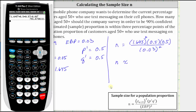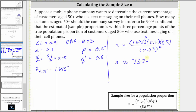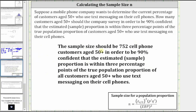Enter. Notice how we do get a decimal. Regardless of the decimal, we always want to round up to verify the sample size is large enough. So here we round up to 752. Even if we had 751.1, we would still round up, because if we rounded down, the sample size would not be large enough. So now we know the sample size should be 752 cell phone customers age 50 plus in order to be 90% confident that the estimated sample proportion is within three percentage points of the true population proportion of all customers age 50 plus who use text messaging on their cell phones.